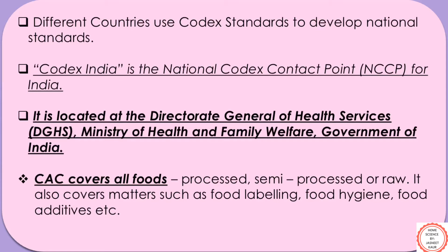Codex India is the National Codex Contact Point, NCCP, for India. It is located at the Directorate General of Health Services, DGHS, Ministry of Health and Family Welfare, Government of India. The Codex Alimentarius covers all foods like processed, semi-processed, or raw. It also covers matters like food labeling, food hygiene, food additives, pesticides residues, and procedure for assessing the safety of foods derived from modern biotechnology. It also covers guidelines for the management of official, i.e. government, import and export inspection and certification system for foods.